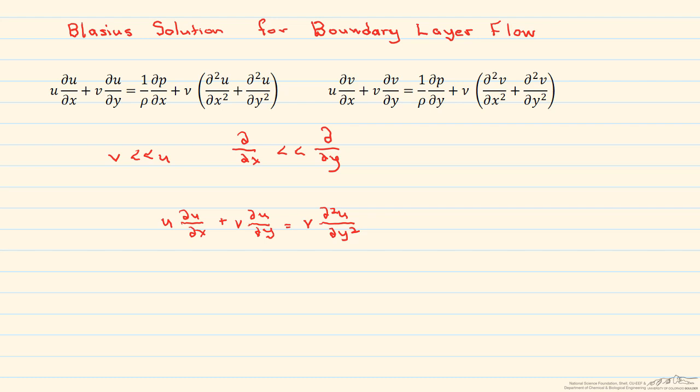Our boundary conditions for the boundary layer are that u equals v equals zero at y equals zero. If we draw a picture of the velocity profile along this plate, so this is x and this is y, we get something that looks like this, which is parabolic. You can see that u and v are zero at the plate.